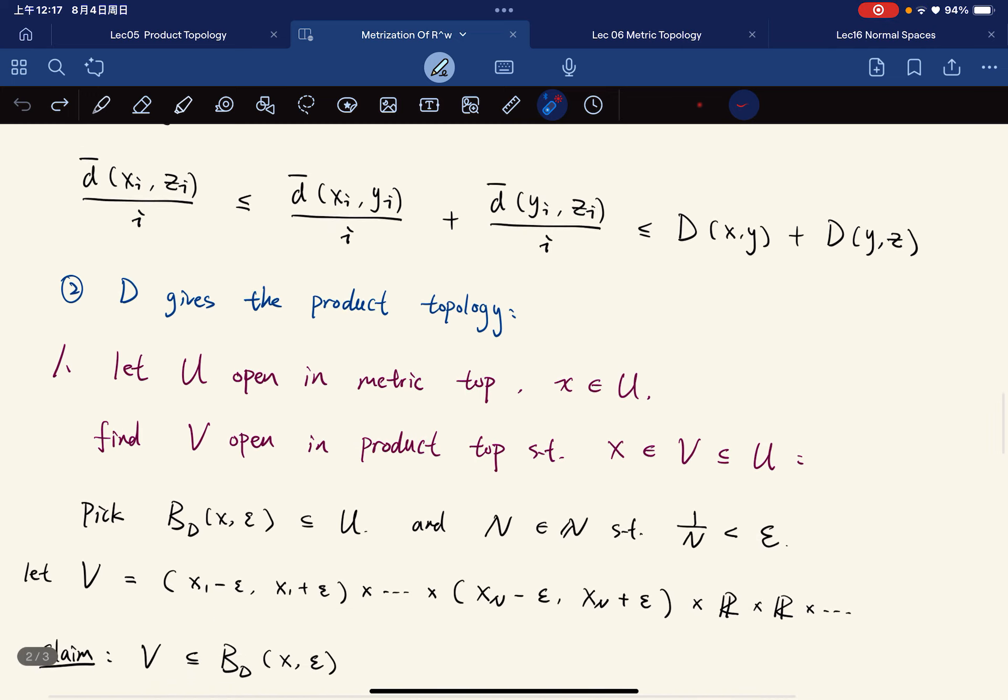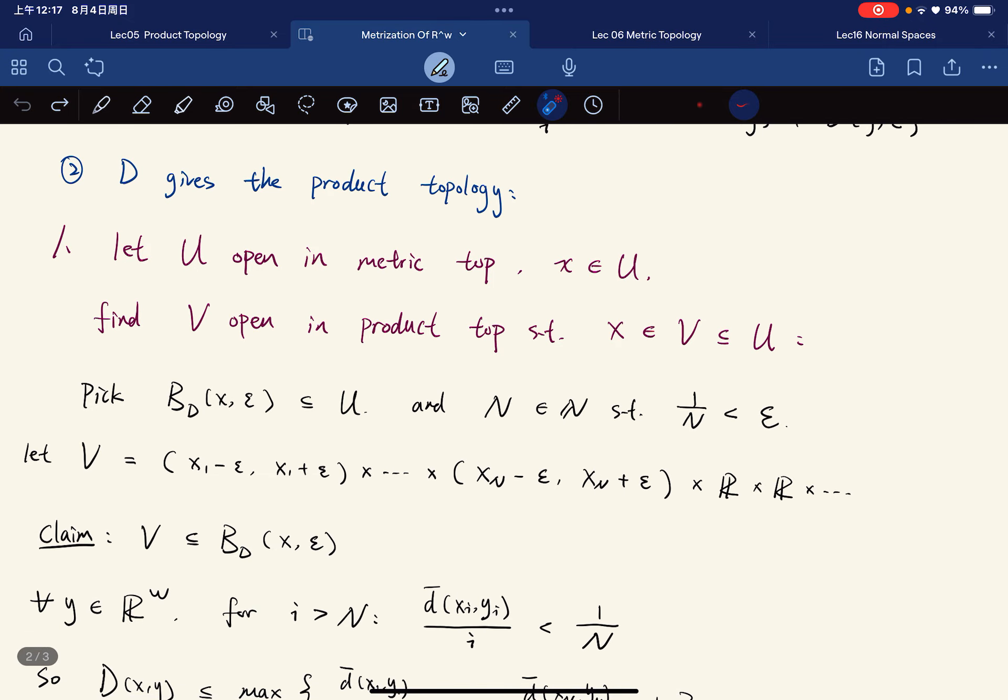So we have verified that this is indeed a metric. Now we're going to show that this gives the product topology. First, we're going to show that each topology is finer than each other.